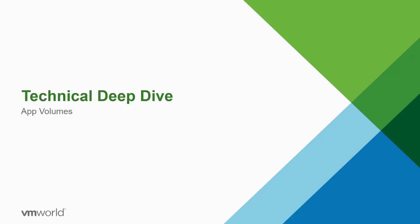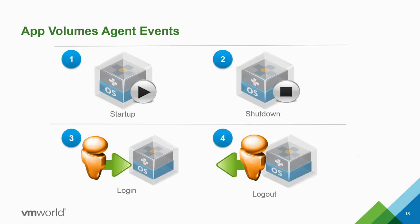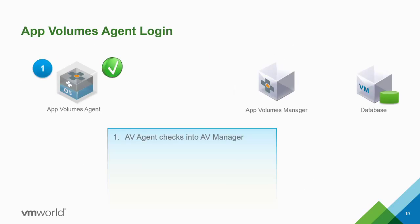Now let's go a little deeper. When talking about the App Volumes agent, there are four basic events: startup, shutdown, login, and logout. Different things happen during each event. I'm going to focus on login because it's the most important when troubleshooting, and understanding what happens is really helpful.